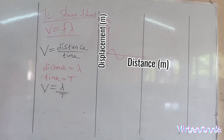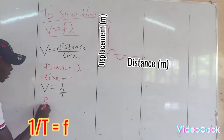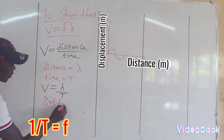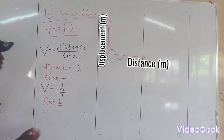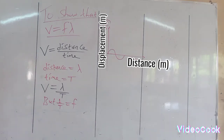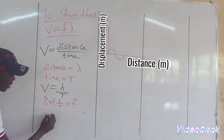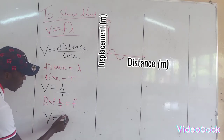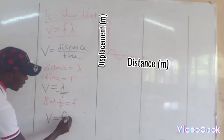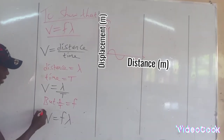We all know that the reciprocal of period — one over period — equals frequency. So that means velocity is given by frequency times wavelength, or frequency lambda.